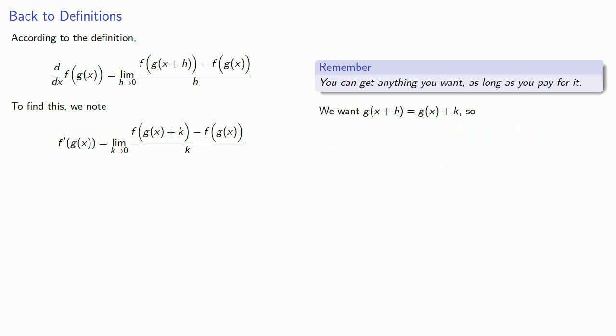Incidentally, that's why it's so important to have switched the variables out, because the h inside the parentheses is going to be different from the k outside the parentheses.